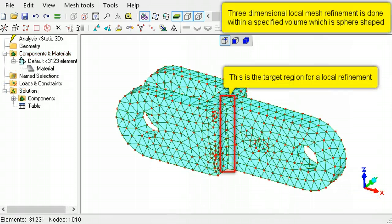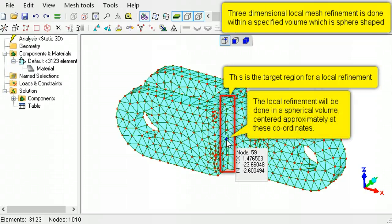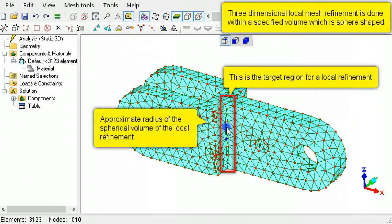To locally refine a three-dimensional model, first make a note of the x, y, and z coordinate for that location. Then determine the radial distance around this point to which the local mesh refinement must be applied.